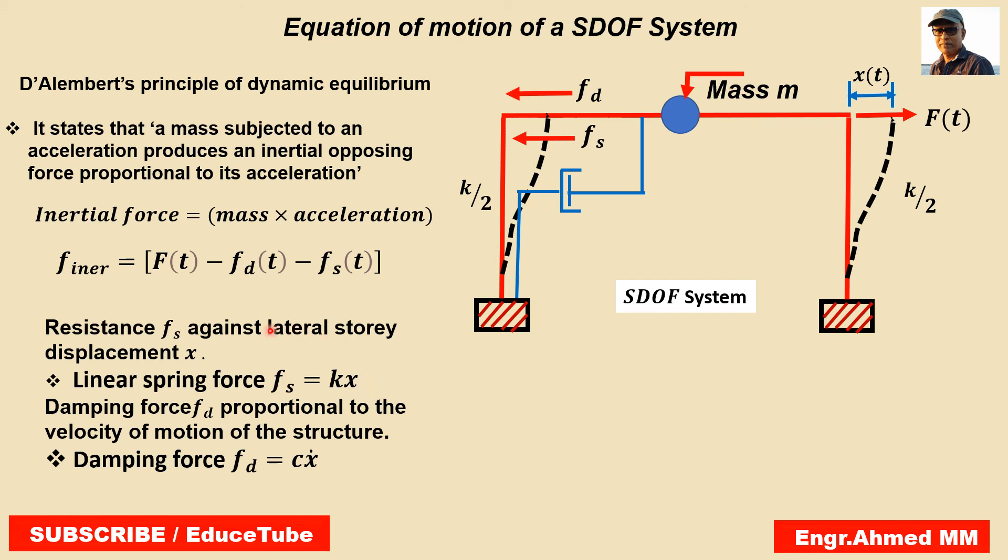Again, damping force Fd opposing the motion is assumed to act at roof level. We can see it here, and is taken to be proportional to the velocity of the motion of the structure. Damping force Fd equals C times velocity.